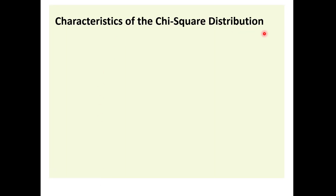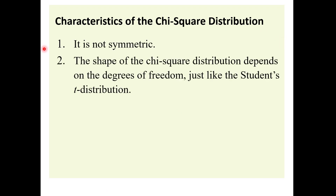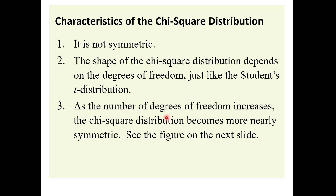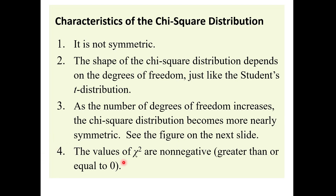Characteristics of the chi-square distribution: One, it's not symmetric. Two, the shape of the chi-square distribution depends on the degrees of freedom, just like what we learned when we were looking at the student's t-distribution previously. Three, as the number of degrees of freedom increases, the chi-square distribution becomes more nearly symmetric. And four, the values of chi-square are non-negative, so they're greater than or equal to zero.